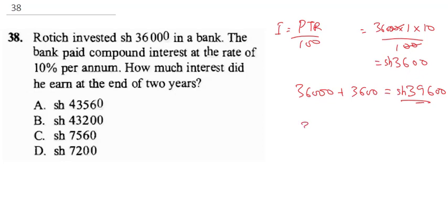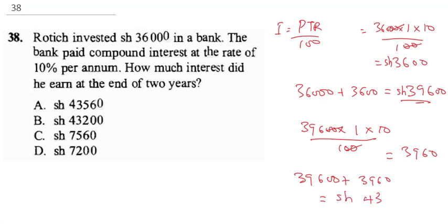We'll perform this again. 39,600 multiplied by 1, multiplied by 10, all over 100. Canceling the zeros, this gives us 3,960. Now we sum these two up: 39,600 plus 3,960, which gives us a total of 43,560 shillings.